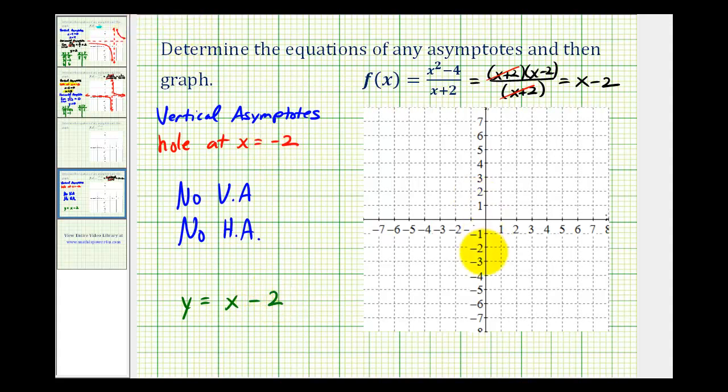So we have a y intercept of negative two. Our slope is one or one over one. So from our y intercept, we'll go up one, right one. And we can do that again. So our line will pass through these points and will look something like this.